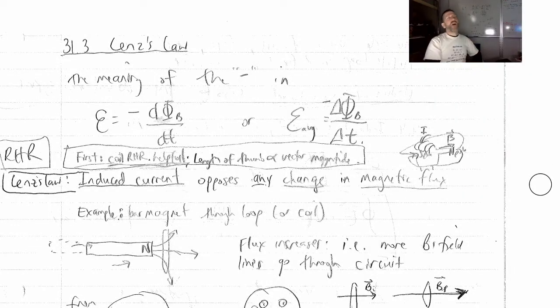Lenz's Law. And all this is, is the meaning of the negative sign in Faraday's Law. So this gives us, here's our EMF, is negative dΦ_b/dt, or if you're just getting the average value, or if you're in the AP Physics 2 class, the average EMF is negative ΔΦ_b over Δt. And this is our very last right hand rule.